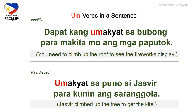Infinitive: dapat kang umakyat sa bubong para makita mo ang mga paputok. Dapat means need to or have to, umakyat is to climb up, bubong means rooftop, para is in order to, makita is to see, and mga paputok means fireworks — you need to climb up the roof to see the fireworks display. Past aspect: umakyat sa puno si Jasvir para kunin ang saranggola. Umakyat means climbed up, puno is a tree, kunin is to get, and saranggola means kite — Jasvir climbed up the tree to get the kite.